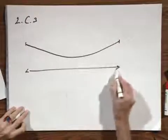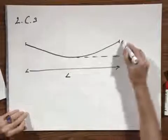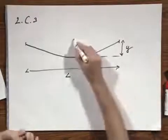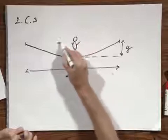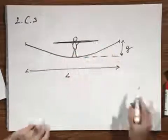The length of the rope is L. And the rope is sagged over a distance Y. And here is the tightrope walker. She holds a very long horizontal bar in her hand for stability.